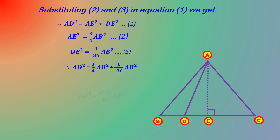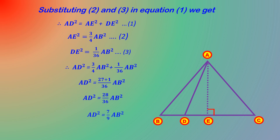AD square equals 3/4 AB square plus 1/36 AB square. Taking LCM as 36: AD square equals (27 plus 1)/36 AB square, equals 28/36 AB square. Cancelling: AD square equals 7/9 AB square. Cross multiplying: 9 AD square is equal to 7 AB square. Hence proved.